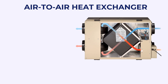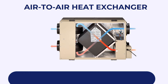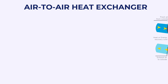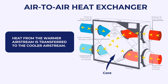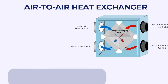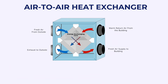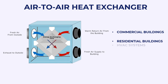Air-to-Air Heat Exchanger. An air-to-air heat exchanger, also known as a Heat Recovery Ventilator (HRV) or Energy Recovery Ventilator (ERV), is a device designed to transfer heat energy from one airstream to another within a confined space. As the air passes through the heat exchanger core, heat from the warmer airstream is transferred to the cooler airstream. By recovering heat energy from the exhaust air, air-to-air heat exchangers reduce the load on heating and cooling systems, leading to lower energy bills. They are mostly used in commercial buildings, residential buildings, and HVAC systems.